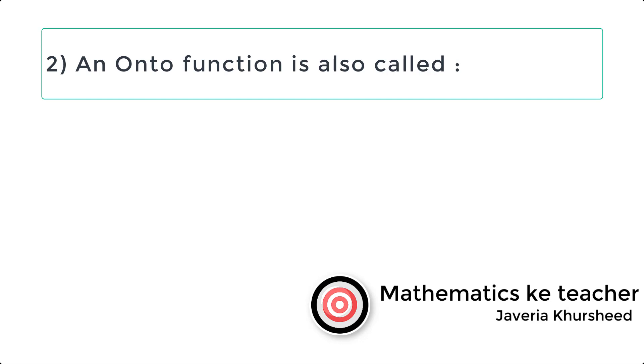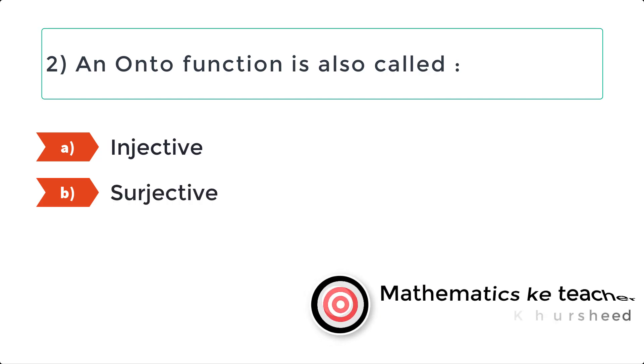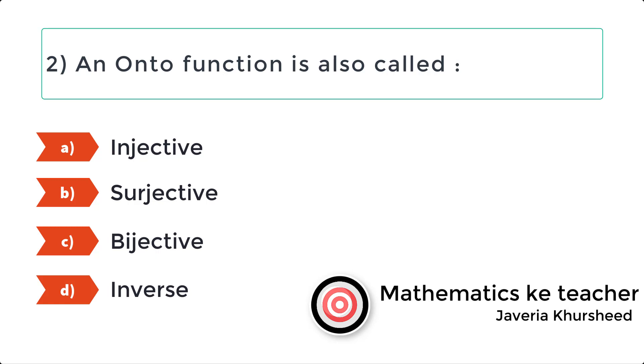2. An onto function is also called A. Injective. B. Surjective. C. Bijective. D. Inverse.